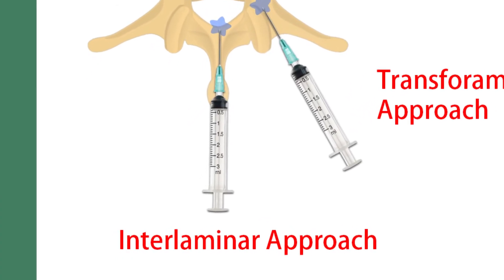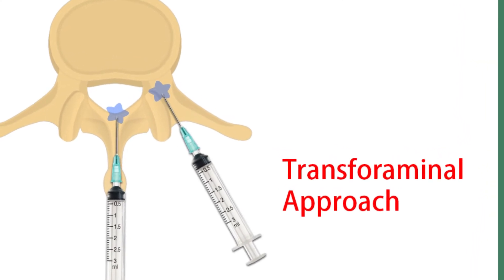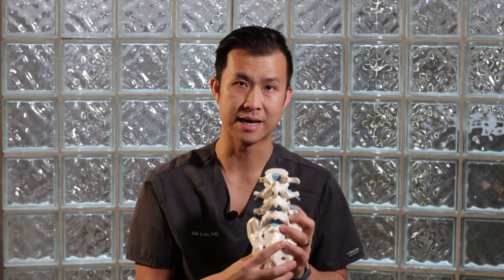There are two different approaches we use. One is called the interlaminar approach, and the other is the transforaminal approach. The interlaminar approach is the straight shot in the back — the approach typically used by anesthesiologists for labor and delivery epidurals. The transforaminal approach comes from the side. This approach has the advantage that it may get closer to the disc. I don't think at this point one is superior over the other, so it really depends on what your pain management doctor wants to do.